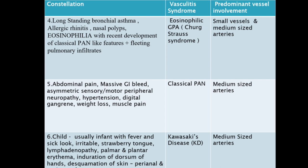The fifth scenario: abdominal pain, massive GI bleed, asymmetric sensory and motor peripheral neuropathy, hypertension, digital gangrene, weight loss, and muscle pain. This is basically classic polyarteritis nodosa, because of medium size arterial involvement.